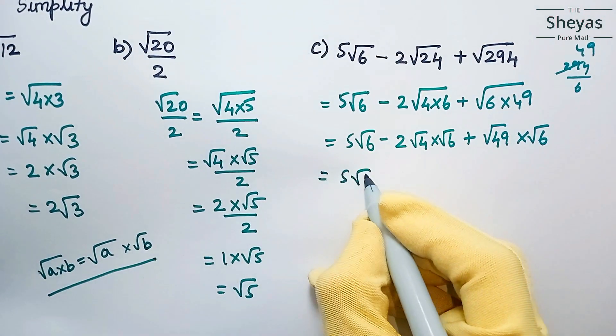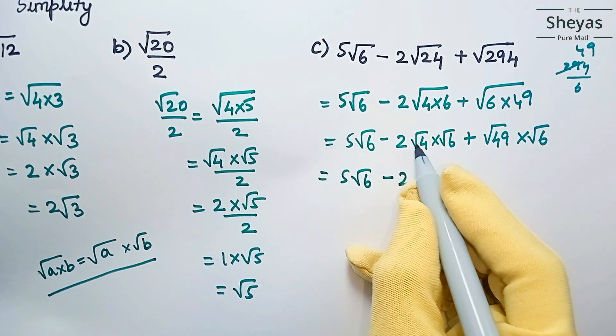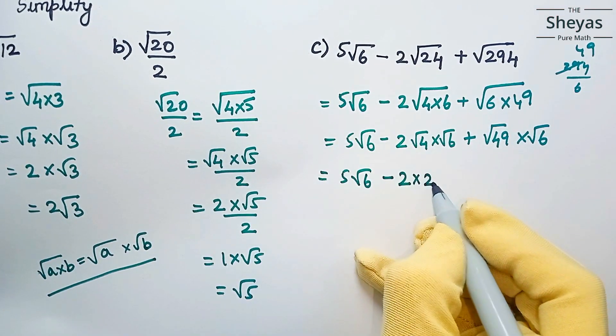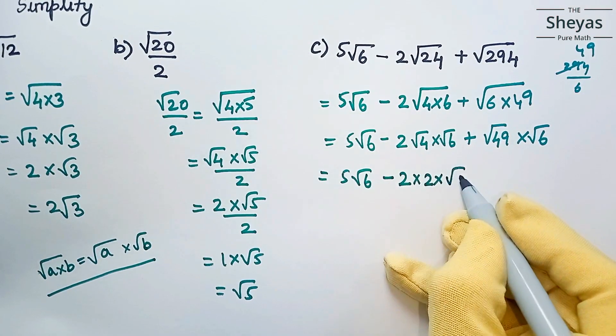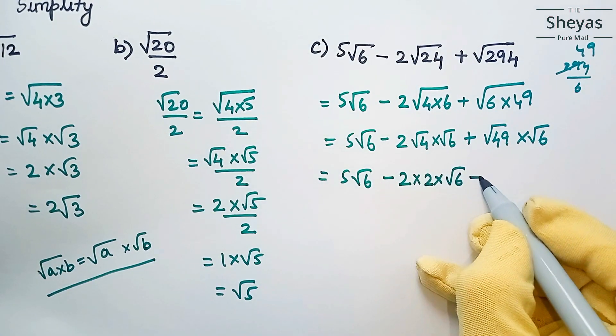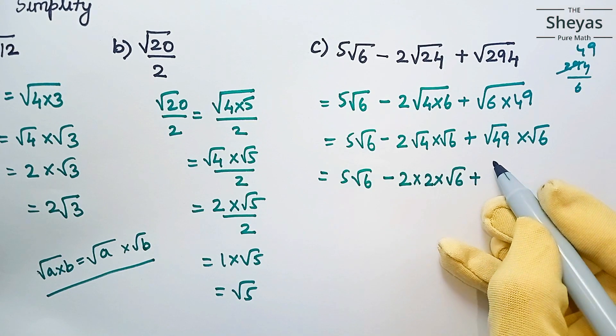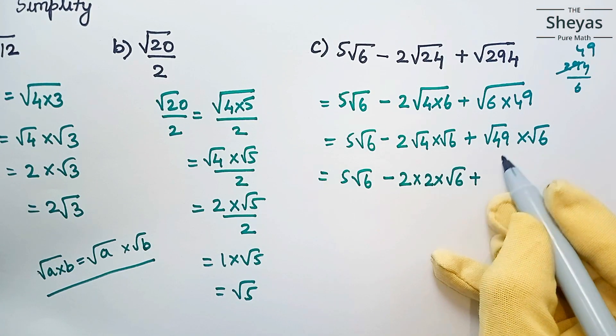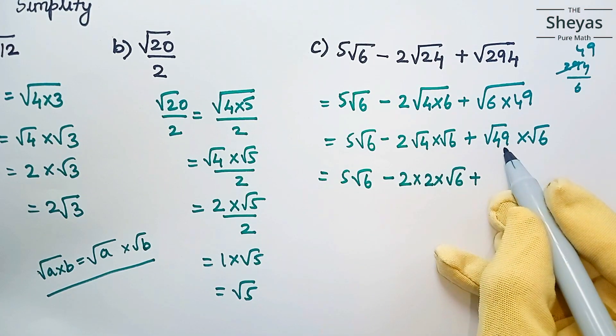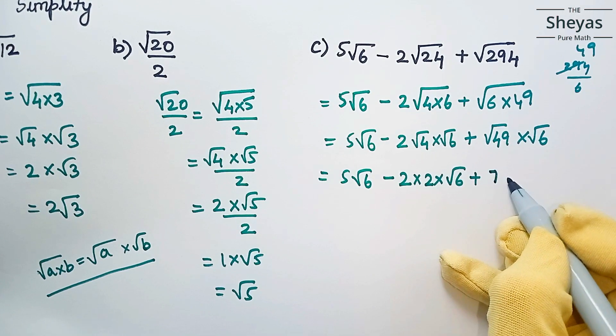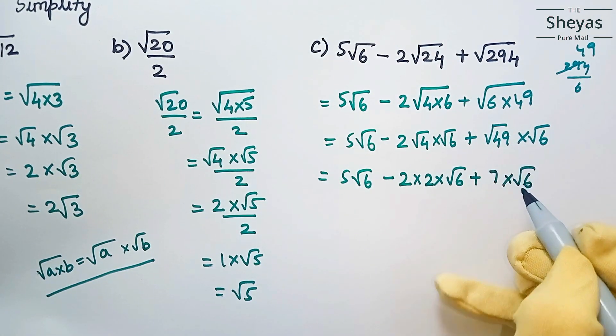Next, 5 root 6 minus 2, root 4 can be written as 2, then root 6 I am writing as such. Plus, root 49 is 7 into root 6.